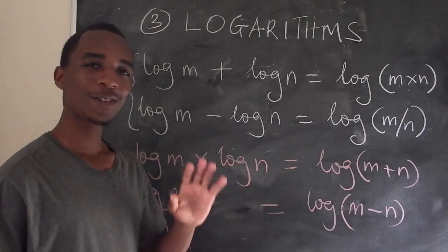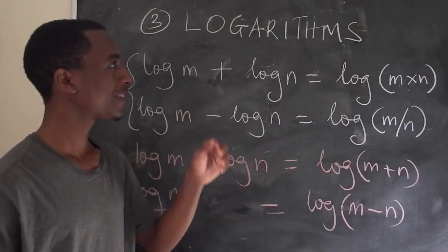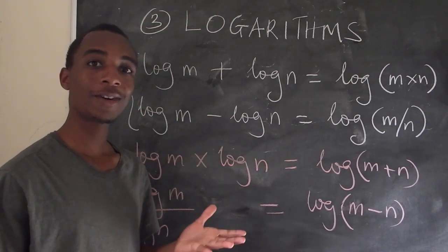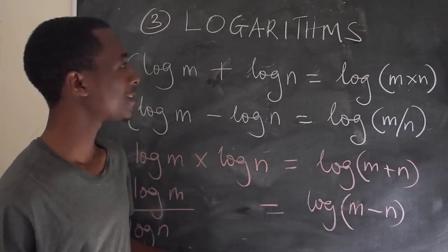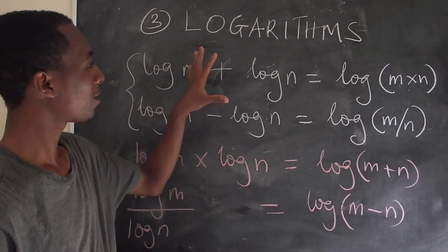So number three is closely related to the first two, the laws of indices. This is about logarithms. So logarithms are the opposite of indices. Now these are two known facts in logarithms.